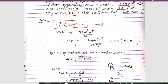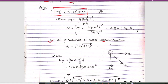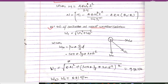Now we will calculate the value of w1, which is the weight of the conductor at worst weather conditions. To calculate w1, we have the relation: w1 = √(wc² + ww²), where wc is the weight due to the conductor and ww is the weight due to wind.